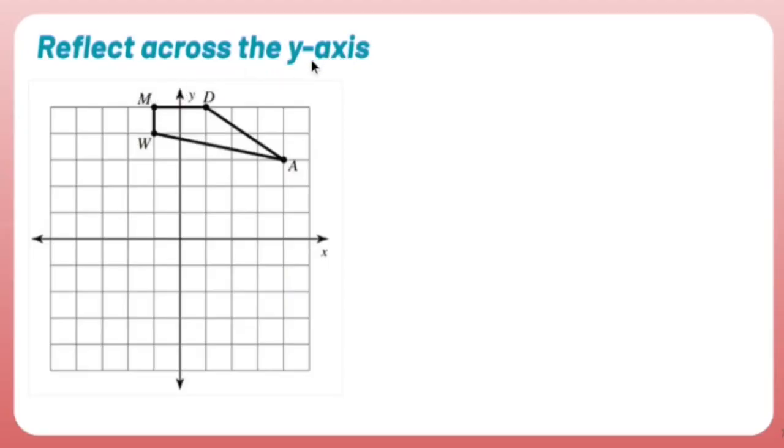Reflect across the y-axis. My y-axis is right here. So what's going to happen with this picture is I'm going to reflect inside of a mirror. Basically what's going to happen is whatever shows up over here is going to be opposite over here, and whatever shows up on the left is going to be opposite over here.